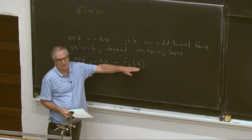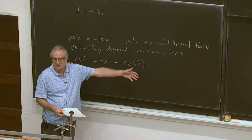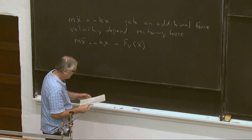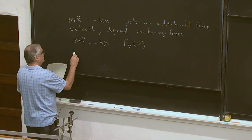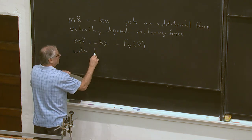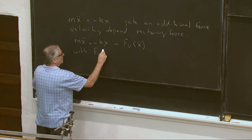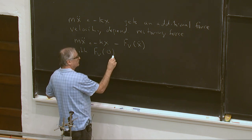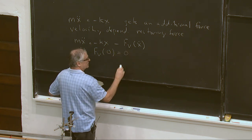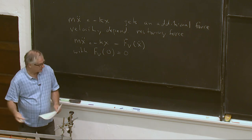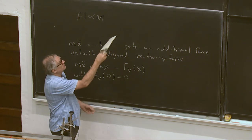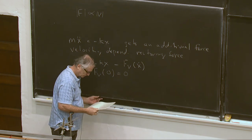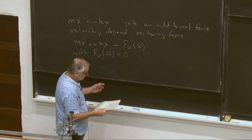So, we can write our force equation as M x double dot is equal to minus k times x minus a velocity dependent restoring force. So, I'll write this as a function of x dot. Of course, x dot is a function of time. So, it's ultimately a function of time. With our velocity dependent force at zero velocity is equal to zero. This Lorentz force is equal to zero when v is equal to zero. And e is equal to zero.